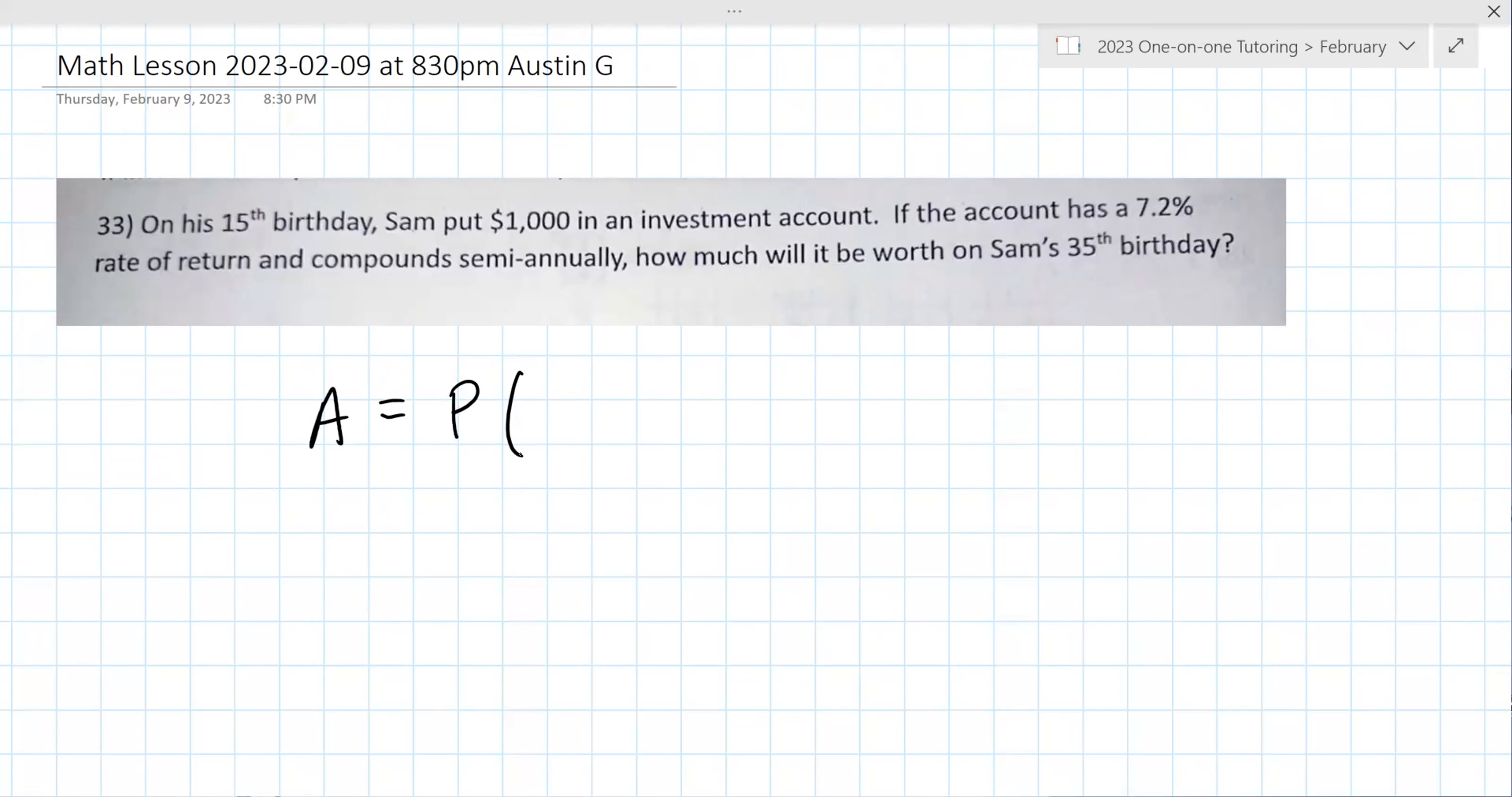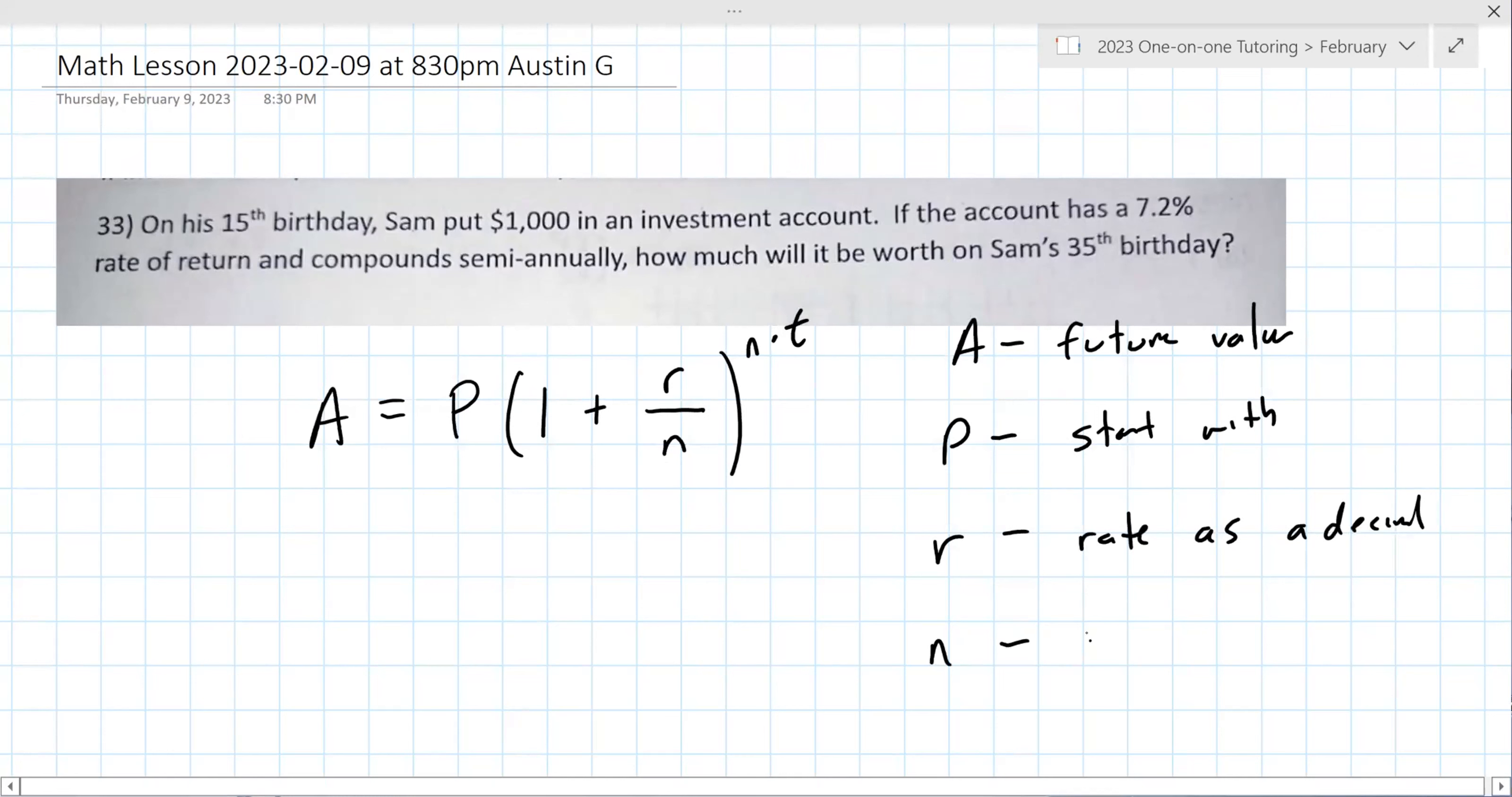Okay. So P is how much you start with. We'll go through that in a moment. It's always 1 plus r, the interest rate. And then n is the number of compounding periods. Again, we'll write all these down to the n times t power. So the A is like the future value. That's usually what you're calculating. P is what you start with.